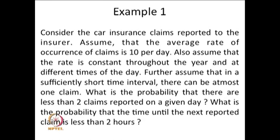We started with this problem of car insurance claims. The claims are events occurring over time. With the assumption that in a sufficiently small interval at most one claim can happen, and that the average rate of occurrence of claims is constant throughout the time, we can think of this as a sort of arrival process — a pure birth process satisfying some conditions — and that may lead into a Poisson process. We will consider this same example again later.